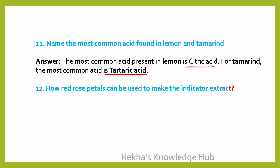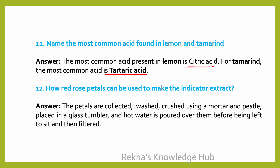How can red rose petals be used to make an indicator extract? The petals are collected, washed, crushed using a mortar and pestle, and placed in a glass tumbler. Hot water is then poured over them, left to sit for some time, and then filtered. The resulting filtrate is the red rose extract.